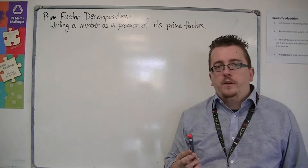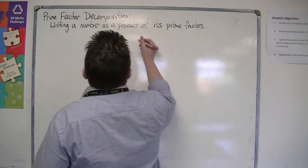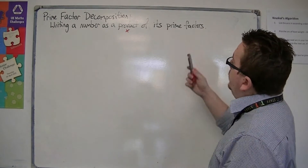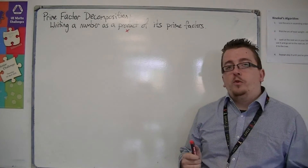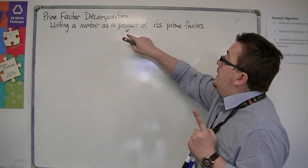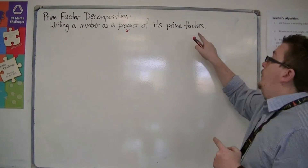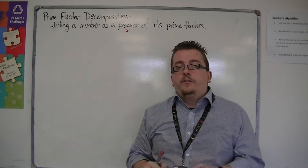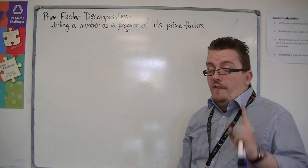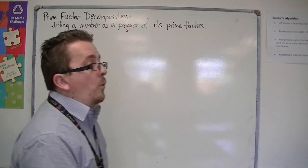The word 'product' in mathematical terms means multiplication, so we're going to have some multiplying involved. We know from previous videos what a prime number is, so it's going to be a product of prime numbers. And we also know what factors are, so it's going to be a product of prime numbers that are also factors. That is how this is broken down.